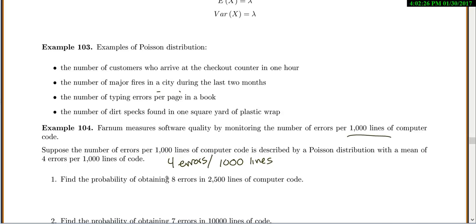So let's find the probability of obtaining 8 errors in 2,500 lines of code. Now one of the interesting things about Poisson is that your λ can change for each situation if you're changing your interval. So 2,500 is different from 1,000, so we have to calculate λ. Well if you had four errors per 1,000 lines, then for 2,500 lines you do 4 times 2,500.